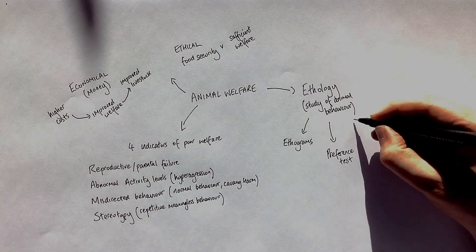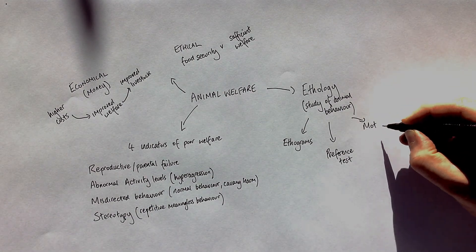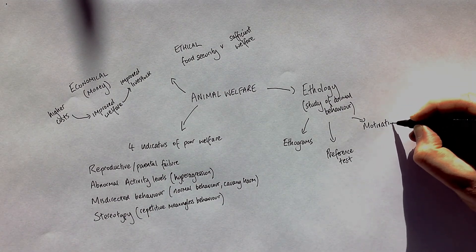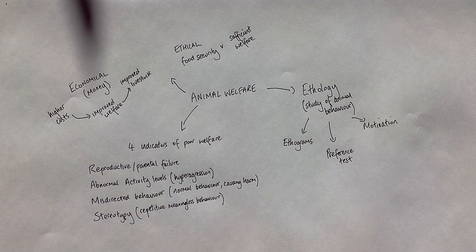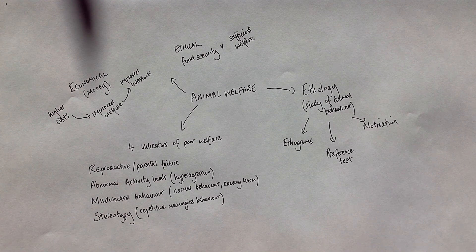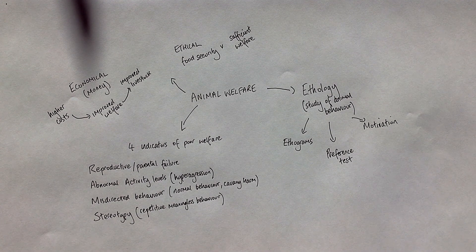The last concept in ethology is motivation. Motivation is a measure of how much an animal wants to carry out a particular task. For example, if an animal has to go through a process to get food, motivation measures what it's willing to go through to reach that food. If the animal is hungry, its motivation is going to be high; if it's just eaten, the motivation is going to be low.